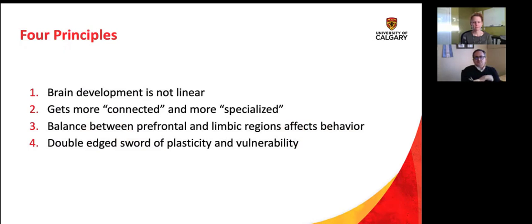So we really hit those four principles of brain development, that it's not linear, that as you get older, your brain gets more connected, more specialized. There is a balance between brain regions that affect behavior. Like, if the boss part of the brain isn't there, it's kind of like the parents are away and the kids can have a bit of a party on the weekend. And then also that double-edged sword that your brain is really great at learning, but it's also really great at learning. And that can be for good and for bad.